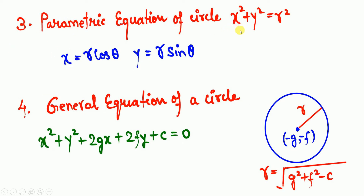The third format is the parametric equation of the circle x² + y² = r², where the center is at the origin. The parametric equations are x = r cos θ and y = r sin θ. This means x and y are changing with respect to theta.